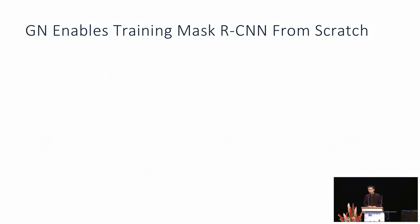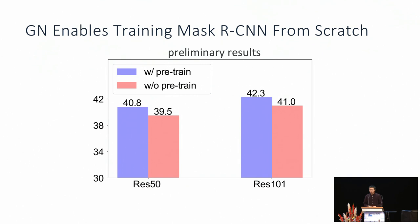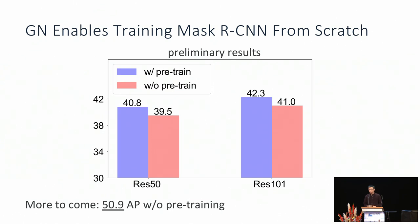Another interesting finding is that group norm enables us to easily train a Mask R-CNN from scratch. Historically, Faster R-CNN and Mask R-CNN systems need to be fine-tuned from ImageNet pre-trained models, primarily because batch norm has the issues we mentioned, and without batch norm it can be very hard to train a deep network from random initialization. However, with group norm, training from scratch turns out to be very easy. We show that with the same number of iterations, we are able to train a Mask R-CNN from scratch, and the AP is very close to the one with ImageNet pre-training — only about one point different. As a teaser, ongoing work shows that even without pre-training it is still possible to reach a very high AP using larger models, group normalization, and some other techniques.